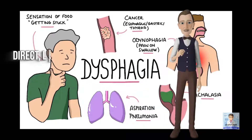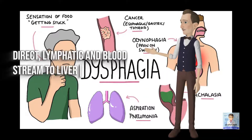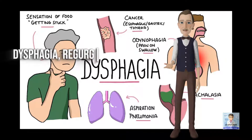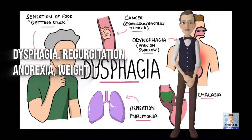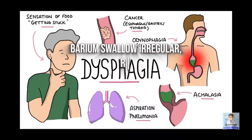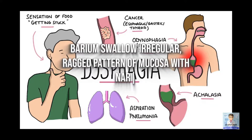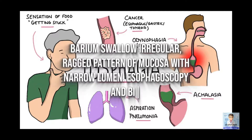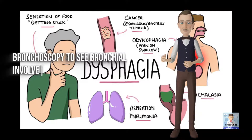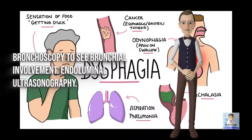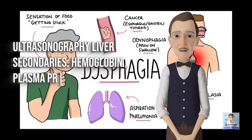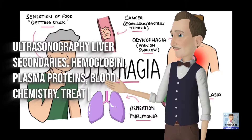Spread: direct, lymphatic, and via bloodstream to liver and bone. Clinical features: dysphagia, regurgitation, anorexia, and weight loss. Diagnosis: barium swallow shows an irregular, ragged pattern of mucosa with a narrow lumen. Esophagoscopy and biopsy. Bronchoscopy to assess bronchial involvement. Endoluminal ultrasonography. Ultrasonography for liver secondaries. Investigations also include hemoglobin, plasma proteins, and blood chemistry.